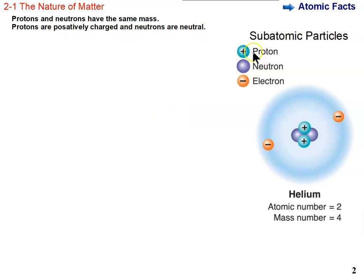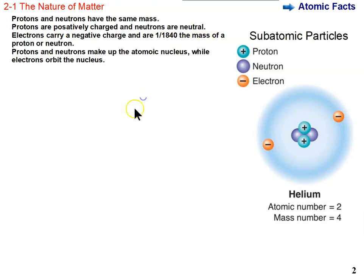Hopefully, because proton starts with a P, you'll remember positive for proton, and neutrons start with an N, neutral. Electrons have a negative charge, and they have a minuscule mass, so minuscule that they're not even considered when considering the overall mass of the atom, what we call the atomic mass. It's 1/1840th the mass of a proton or a neutron.